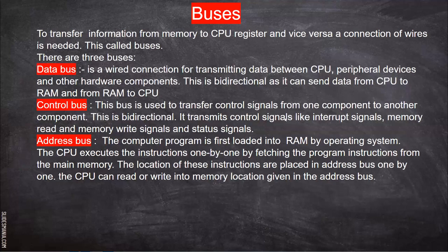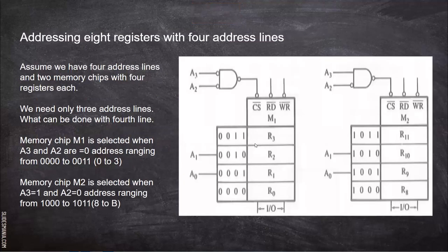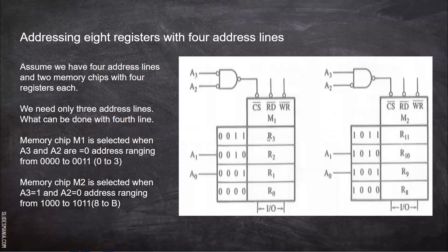Address bus is nothing but what we have seen — these are all addresses for particular locations. So how to place this data? For that, we use the address bus. The address bus is unidirectional because information flows only from the CPU to memory, not from memory to CPU. The CPU will request data from memory by placing the address on the address line.